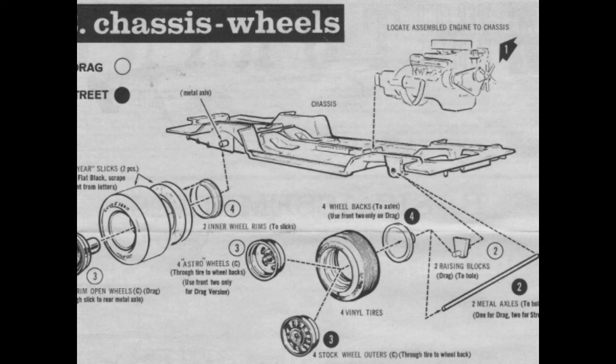Out back, the dragster version saw two-piece plastic Goodyear blue oval racing slicks mounted on chrome reverse wheels. Up front, Astromag wheels were mounted on vinyl Goodyear polyglass tires and raised axle blocks.